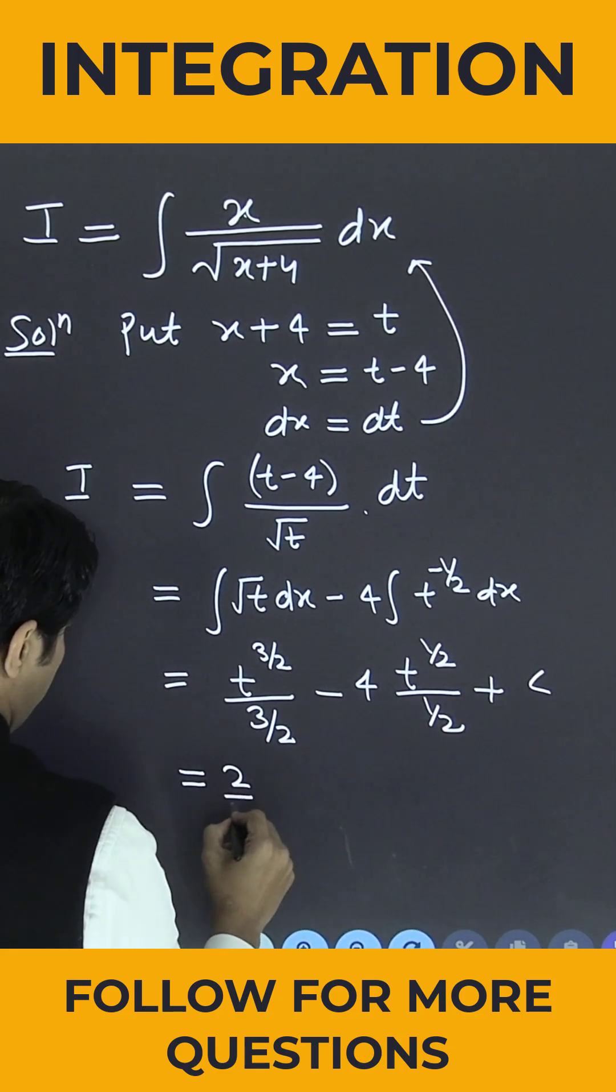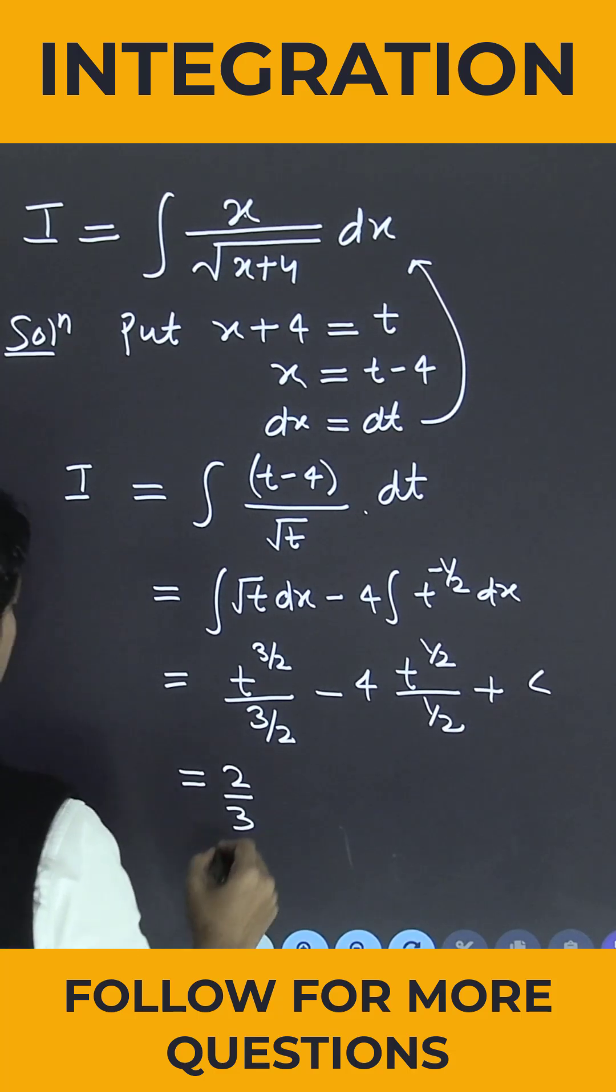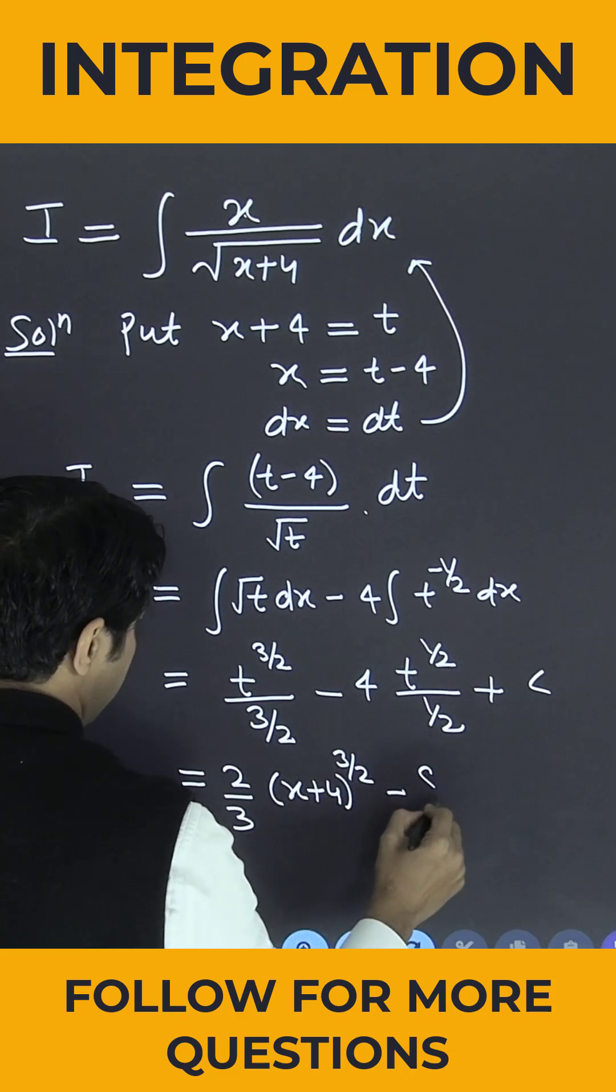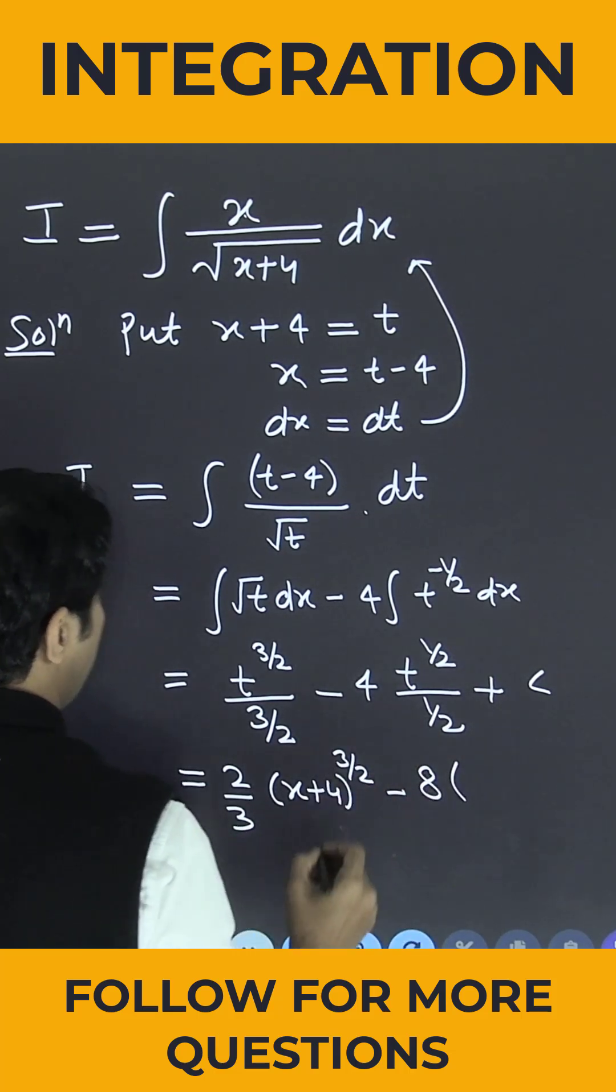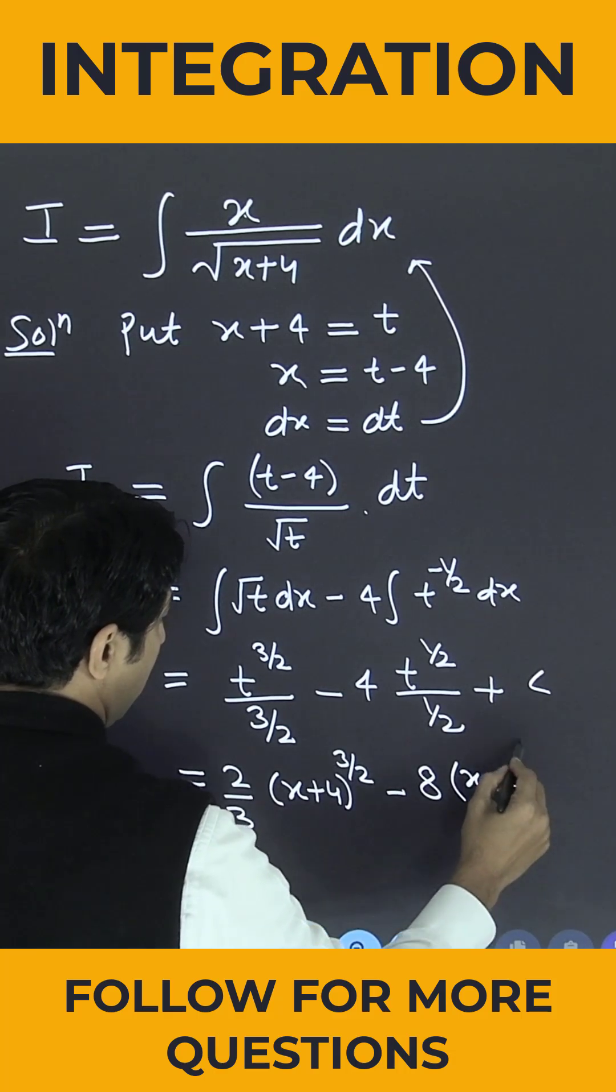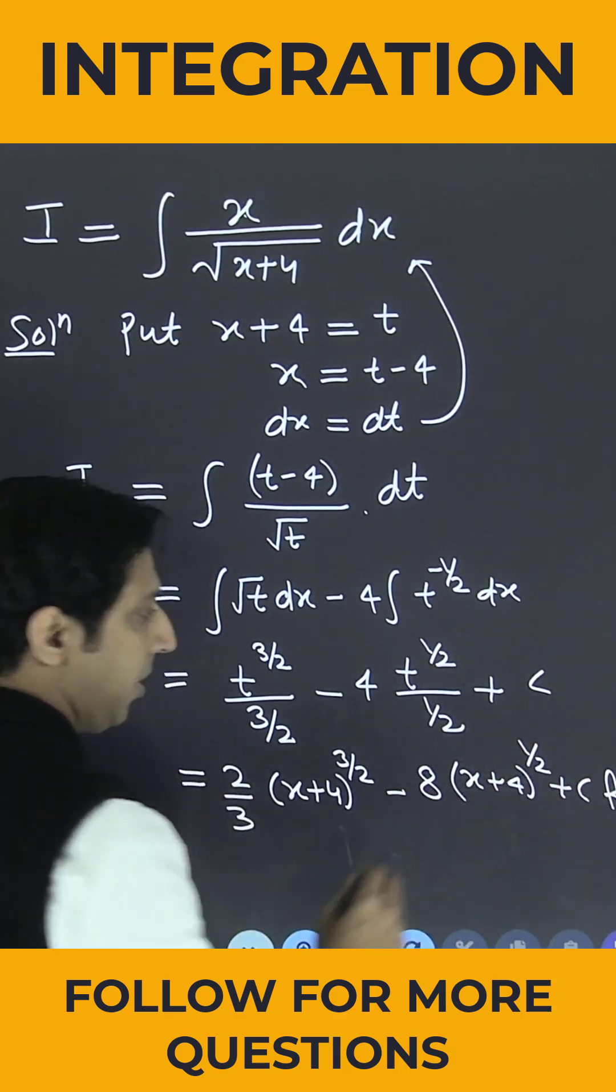So this comes out to be 2 by 3, x plus 4 to the power 3 by 2 minus 8, x plus 4 to the power 1 by 2 plus c is the answer. Thank you.